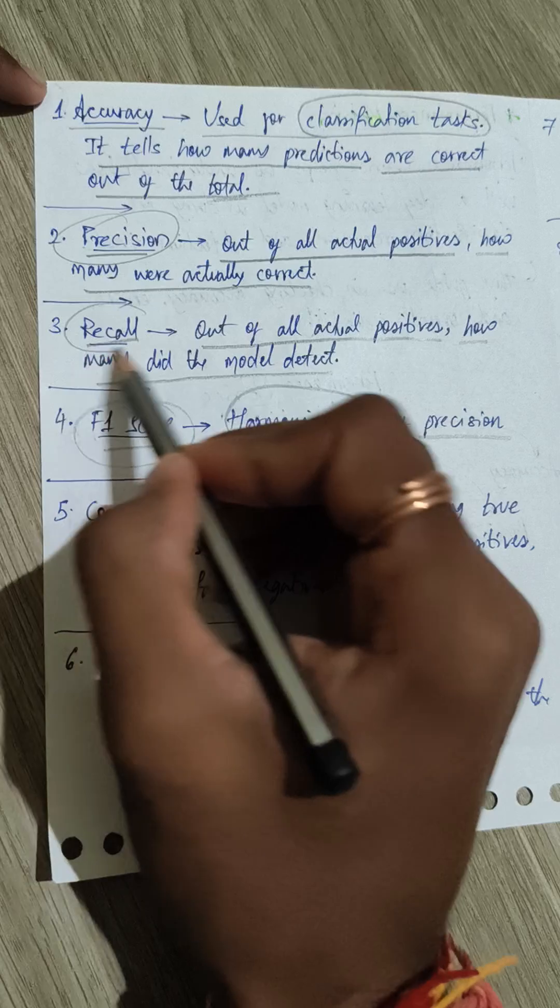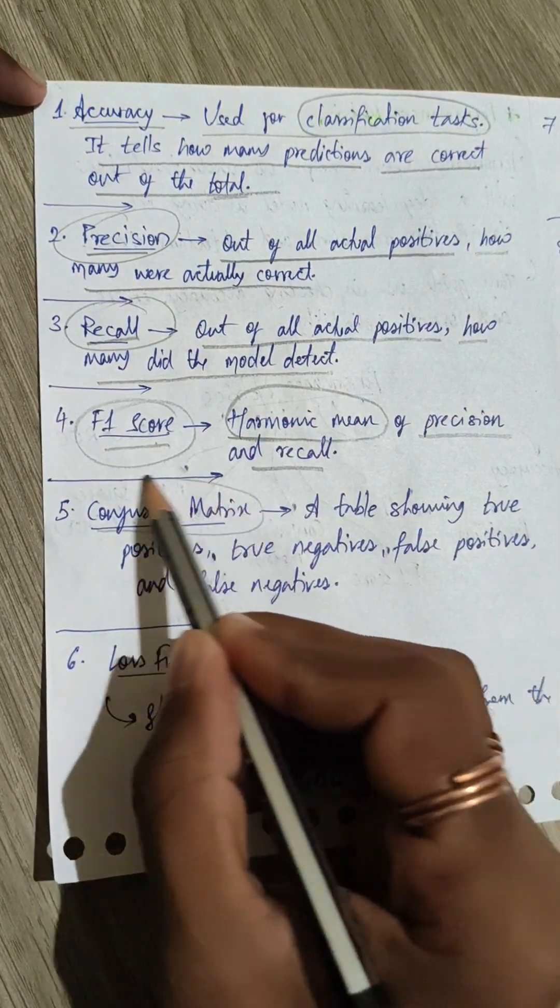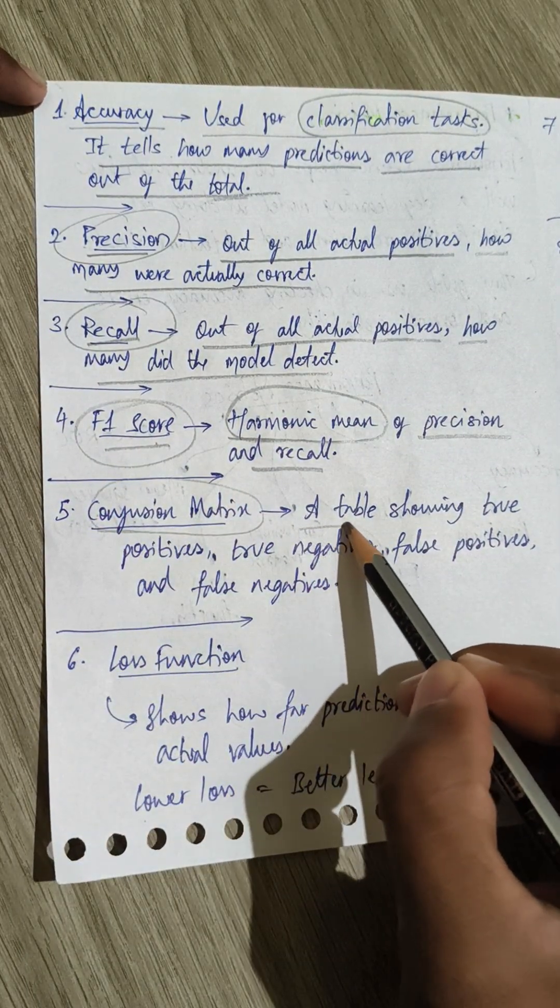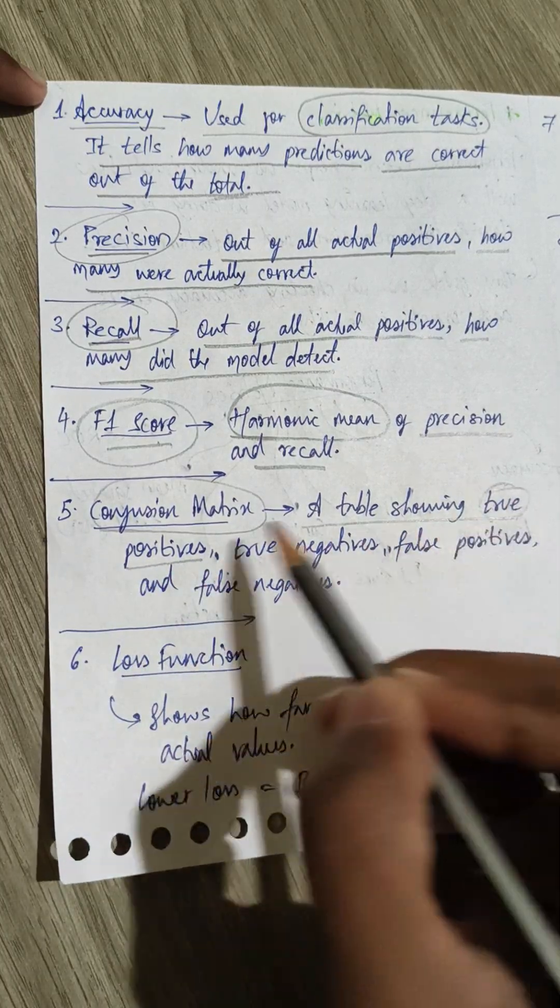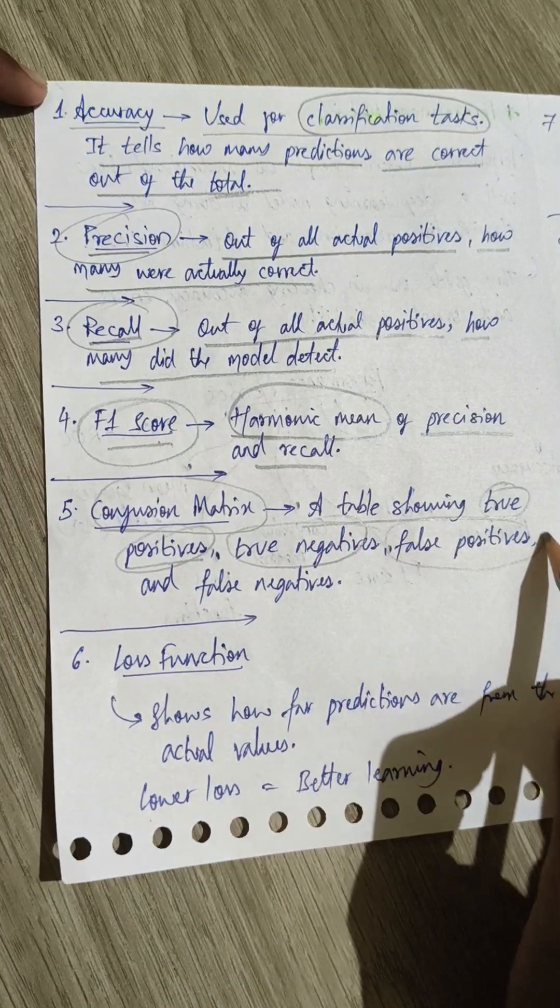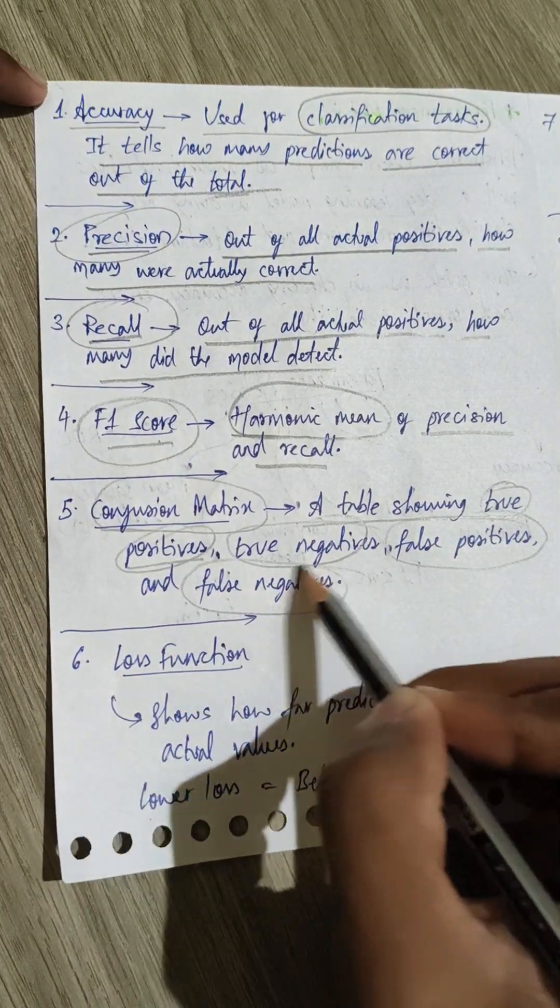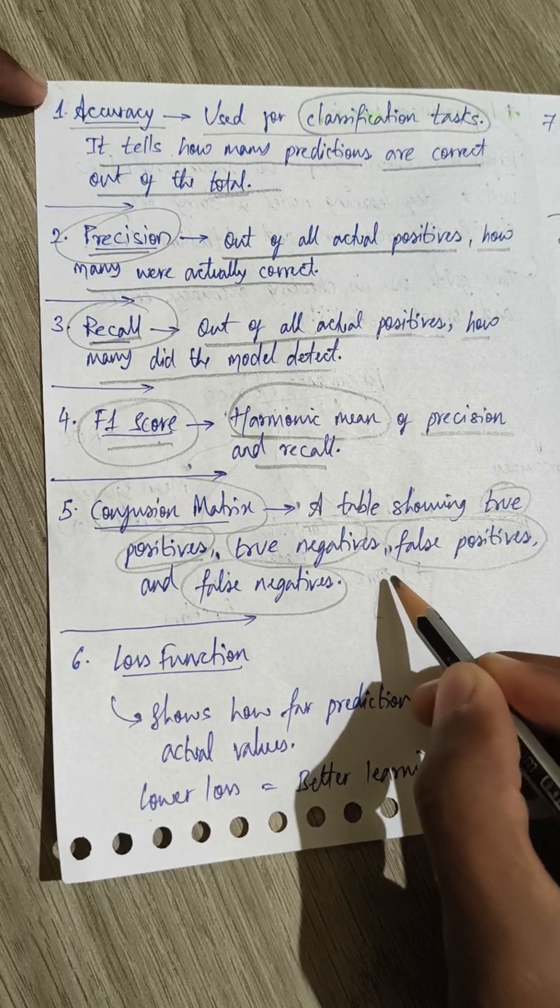Now coming to confusion matrix. It is a table that shows us all the true positives, the true negatives, the false positives, and the false negatives. It's like a matrix where it shows us all true positives, true negatives, false positives, and false negatives.